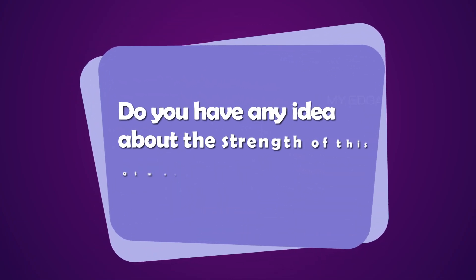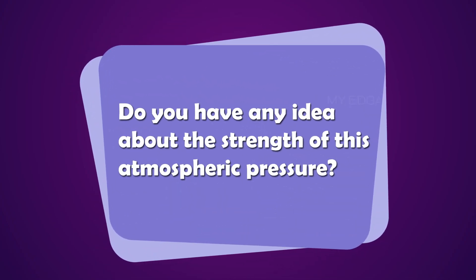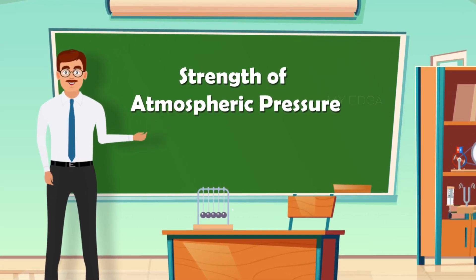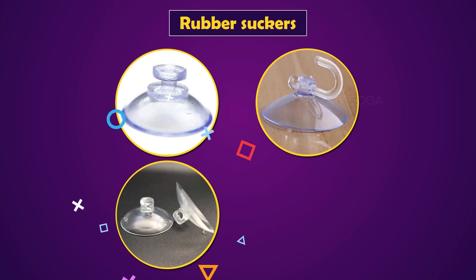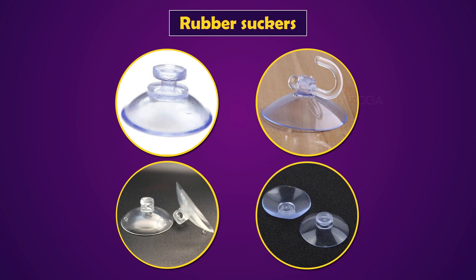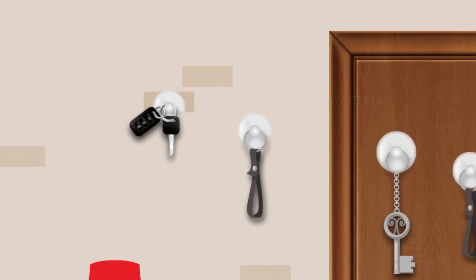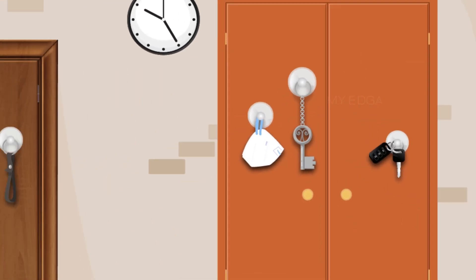Do you have any idea about the strength of this atmospheric pressure? Is it large or small? Let us do an activity to check the strength of this pressure. You might have seen rubber suckers. They are usually used to hold objects together — they are used in our homes for making suction hooks to fix on walls, doors, almirahs, etc.